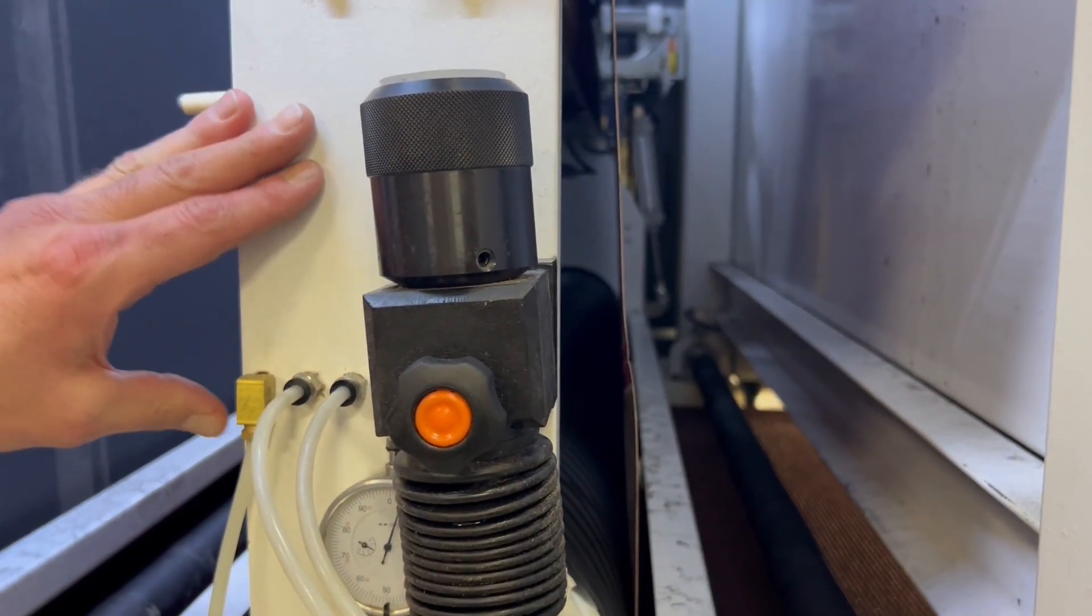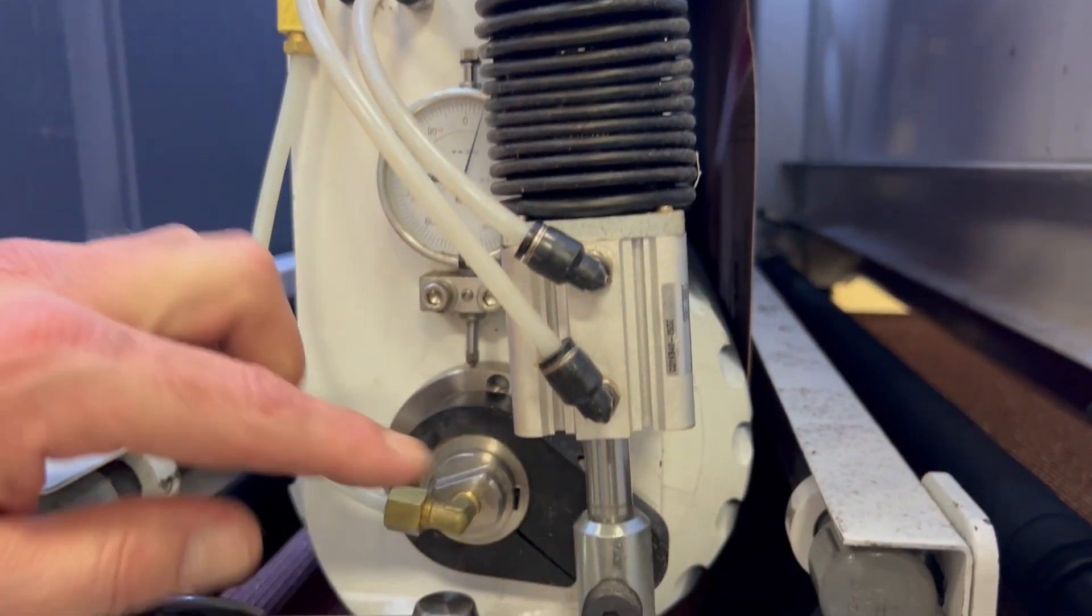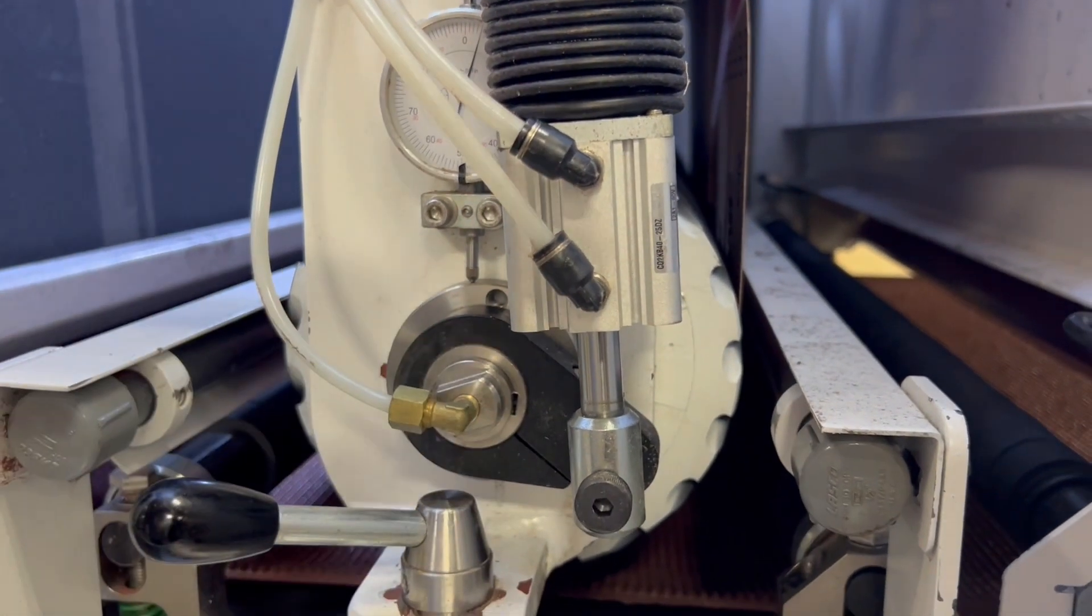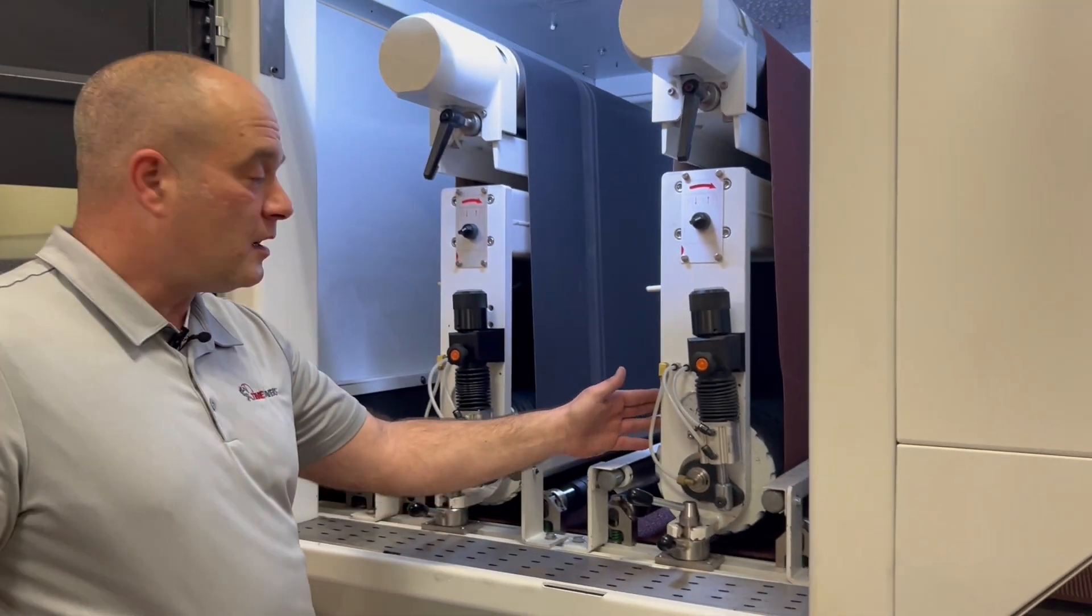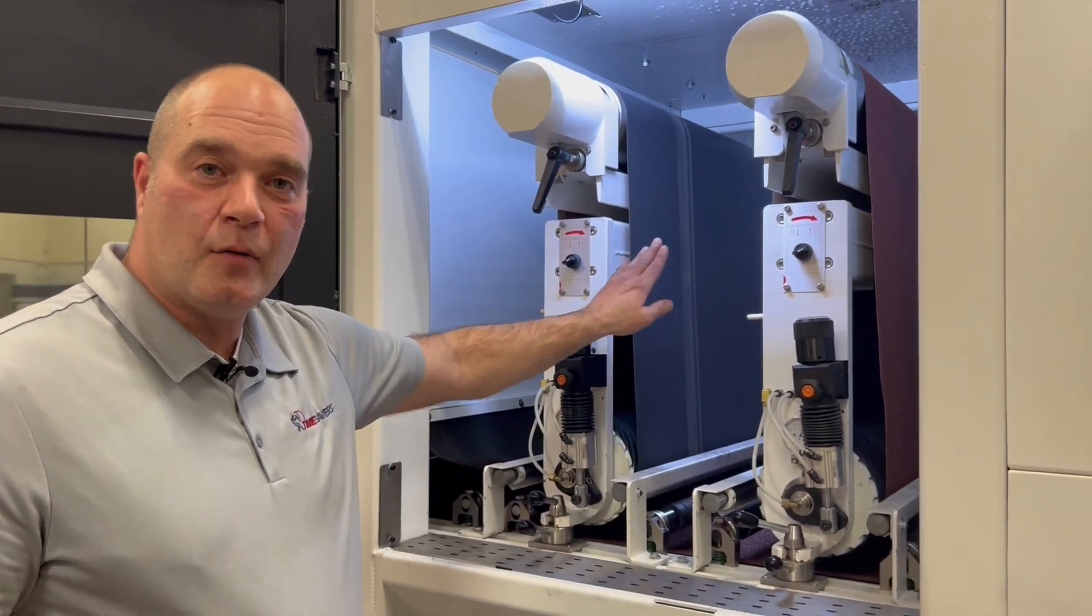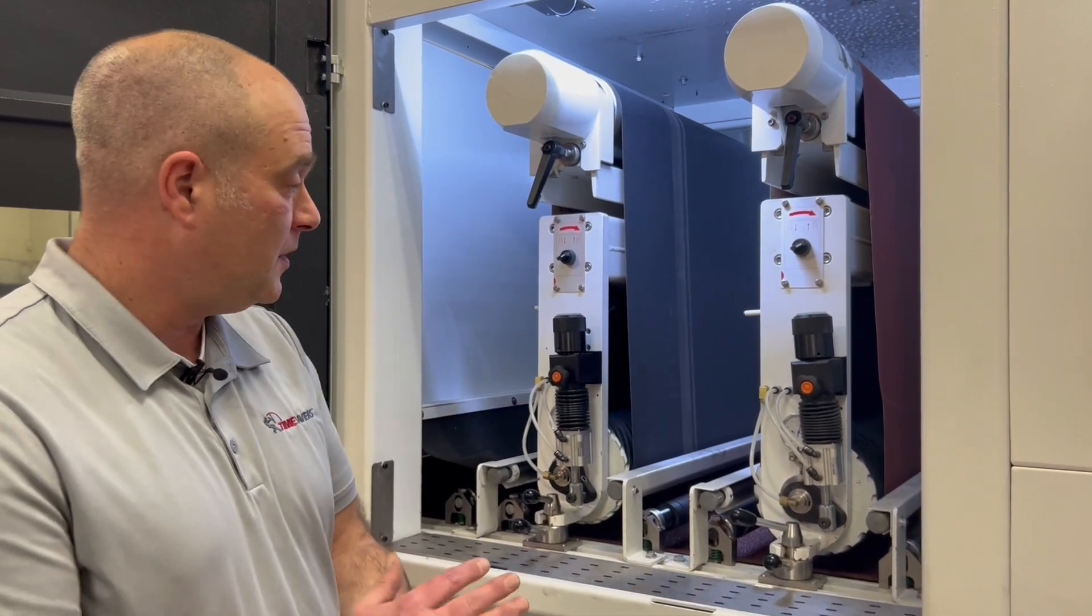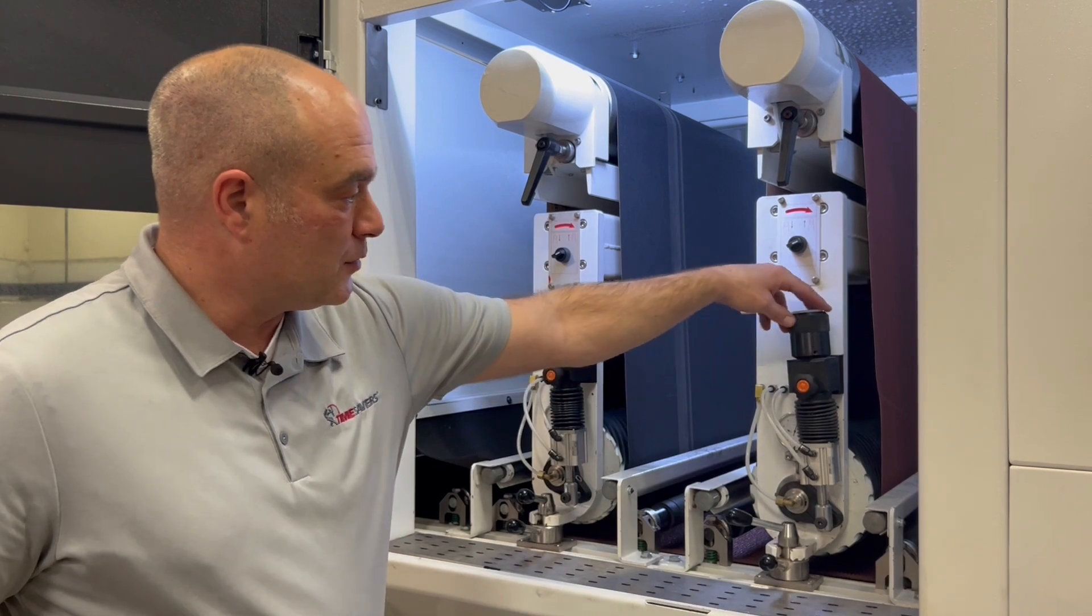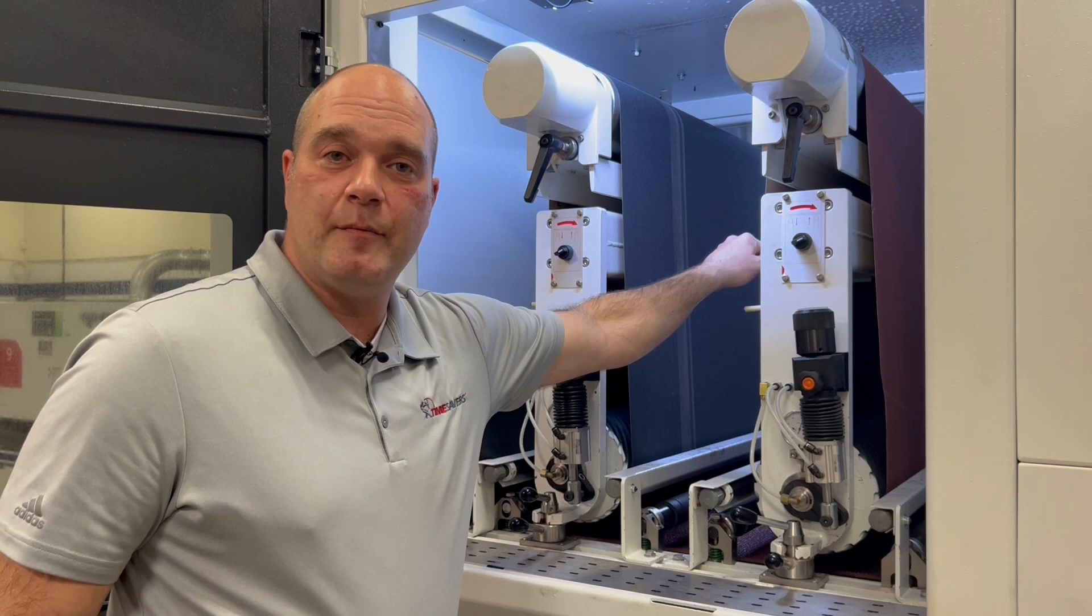Also on this unit here we do have pop-up heads, we do have a dead shaft design so we can actually pop these heads up or down from the control panel here. There might be some jobs where you only need one head. You can go ahead and take the second head up out of the way so you don't have to worry about it, or you can drop it down and put it into the grinding line right away. But you do have manual adjustments here to raise and lower the contact drum depending on the thickness of abrasive belt.